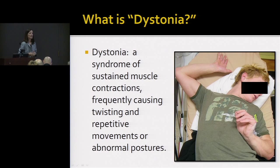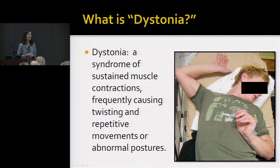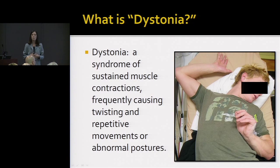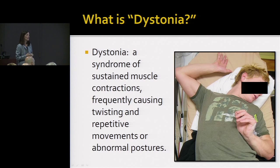What is dystonia? The word means a syndrome of sustained muscle contractions, frequently causing twisting or repetitive movements or abnormal postures. Dystonia can occur in any part of the body, and this picture shows someone who might have general dystonia.